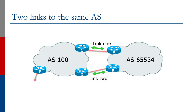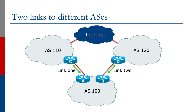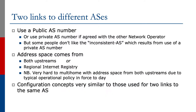The last example showed how to multi-home to the same upstream provider. What we're going to do now is look at how to multi-home to different upstream providers, using two links from the end site to two different service providers. There are a few differences here. First off, we're going to use a public AS number, because the end site is now going to appear on the global Internet as its own entity.